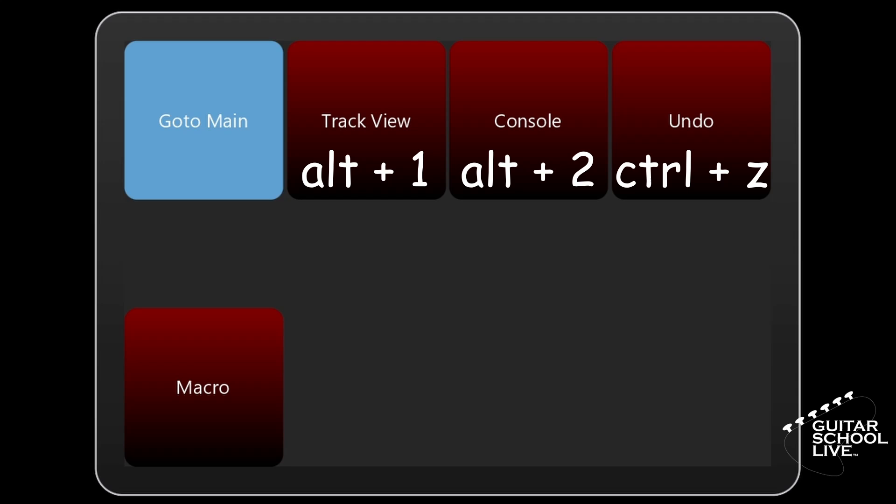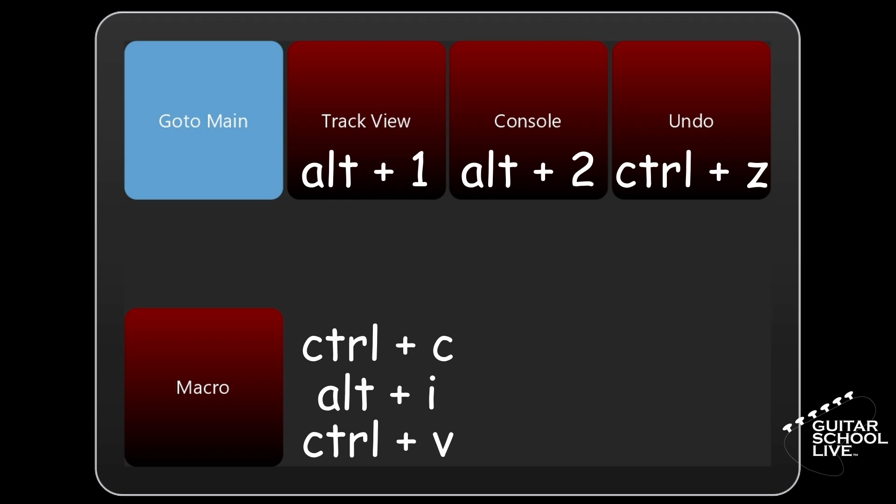The macro will consist of copying the data in a track using CTRL plus C, then inserting a new track using ALT plus I, and finally inserting the copied data into the new track using CTRL plus V. All of these actions will happen in the blink of an eye.